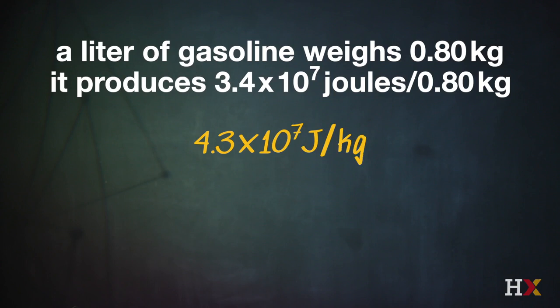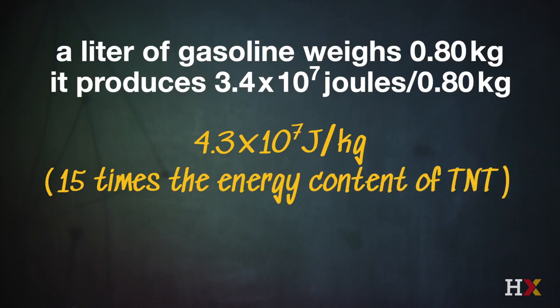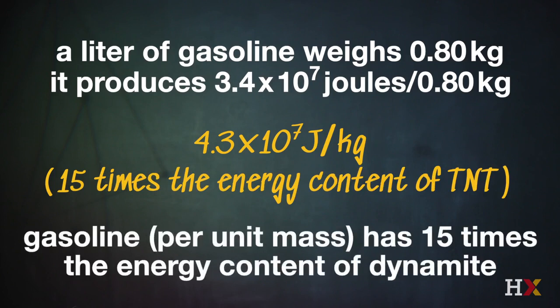Just to put that into perspective, that's a factor of 15 times the energy content of TNT — a highly explosive material. So gasoline per unit mass has 15 times the energy content of dynamite, which tells you how potent the chemical content of gasoline is.